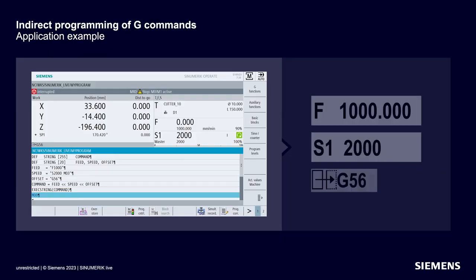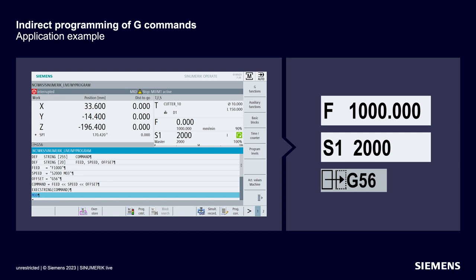If you look at the result in automatic mode of the CNC, you can see that 1000 has been adopted for the feed rate, 2000 for the spindle speed, and G56 for the work offset. This is certainly the most challenging aspect of flexible CNC programming. However, when creating your own user cycles, this is definitely an adequate means of achieving your objectives.